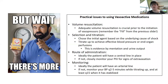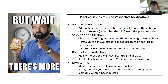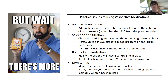When selecting and titrating medications, pick the initial one based on the underlying cause of shock, and titrate to achieve an effective blood pressure or end-organ perfusion. What is an effective blood pressure? It varies patient to patient. Some patients are chronically hypotensive and always run a MAP of 55. Some chronically hypertensive patients can have mental status changes if their MAP drops below 75. End-organ perfusion markers include mentation and urine output — these tell you the brain and kidneys are getting enough blood and oxygen to function appropriately.